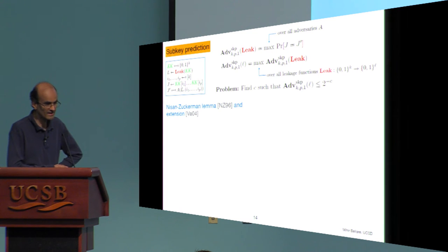These kinds of problems have been looked at in the literature. There's a lemma by Nissan and Zuckerman back from 96, and an extension by Vadan. We tried to apply these, but it doesn't quite apply. And also they're not entirely concrete. They have hidden constants in them, and not the best things to get a precise bound.